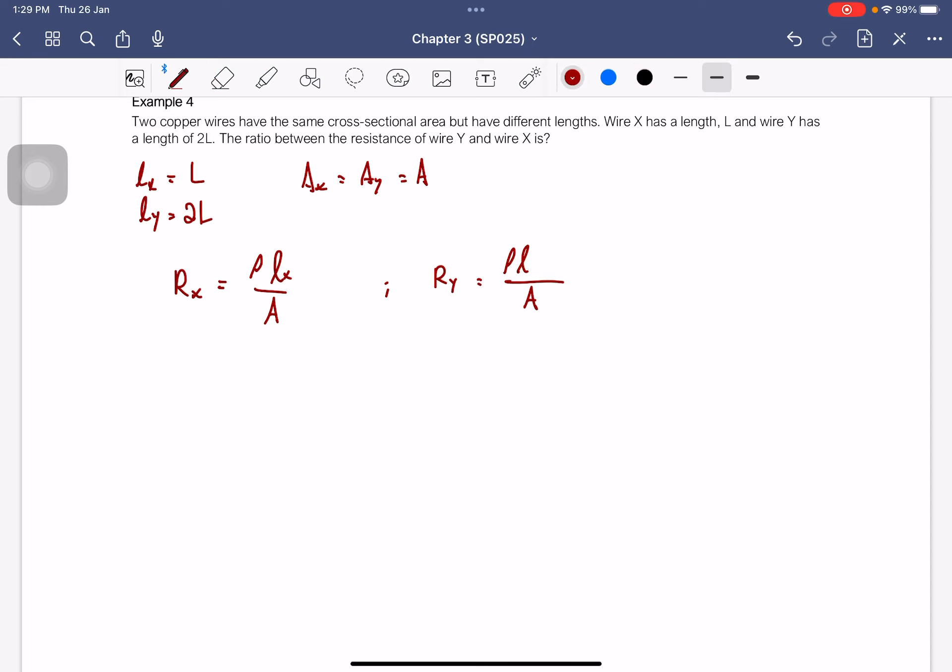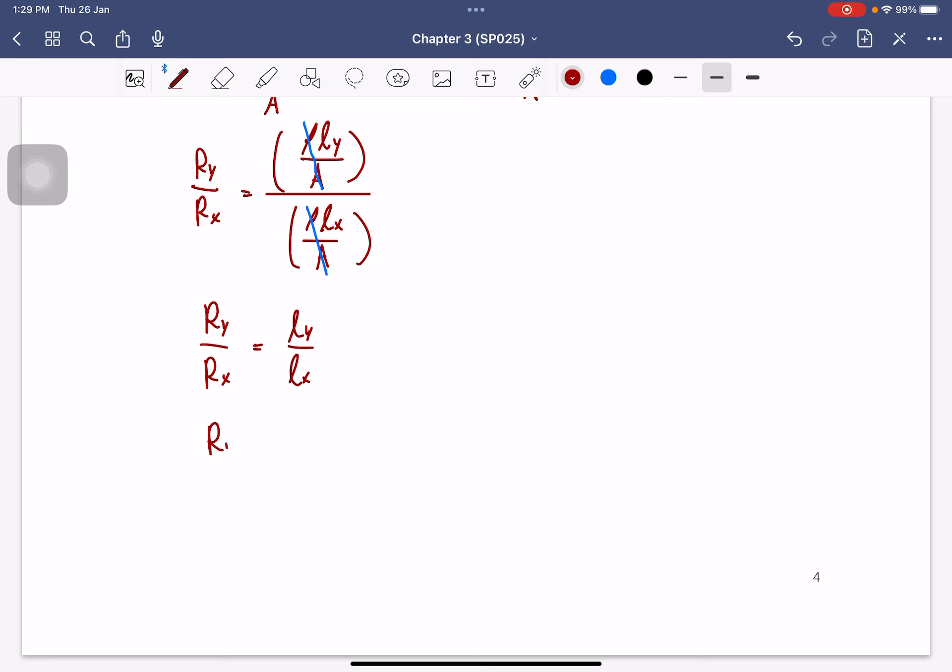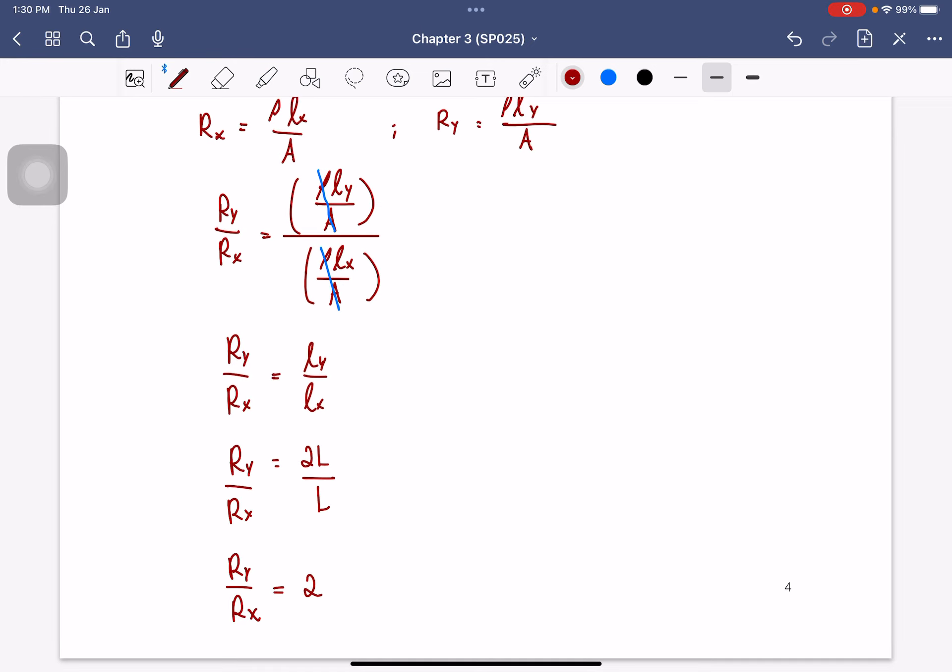So now we need the ratio of wire Y over the wire X. Now you just need to substitute these two equations. So cancel, what can be cancelled? Basically, rho and A can be cancelled. And you will get LY over LX. Now you can substitute. This is 2L. This is L. So the ratio of Y to X is 2. So this is the solution for example number 4.